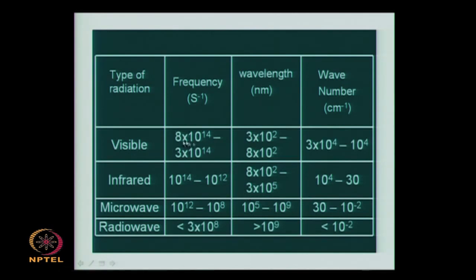Visible light occupies a very narrow range of the electromagnetic spectrum, from violet (near ultraviolet) to red (near infrared) — violet, indigo, blue, green, yellow, orange, red — with wave numbers typically from 10,000 to 30,000 cm⁻¹. Infrared light is lower in energy, 10¹⁴ to 10¹² Hz, followed by microwave and radio waves, which are the lowest in energy, spanning down to about 10⁸ Hz — covering 12 to 14 orders of magnitude in total.